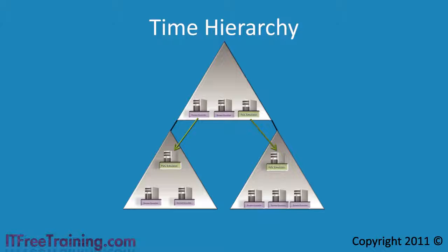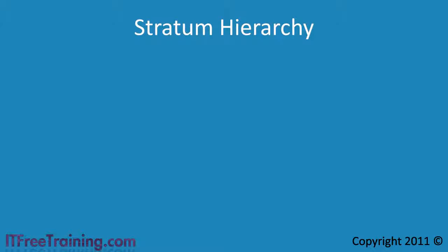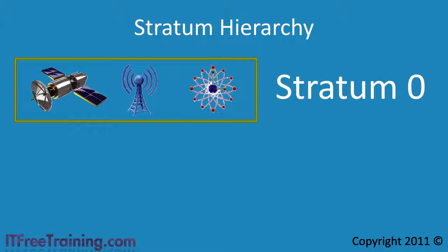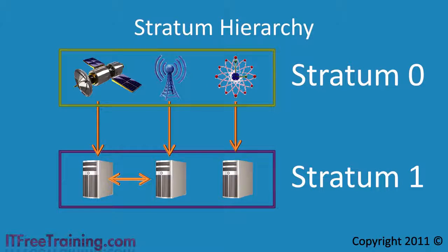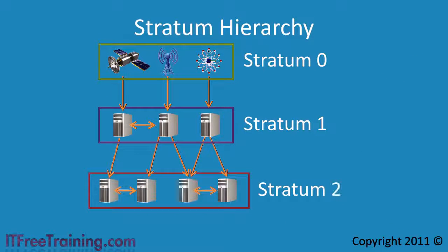If you decide to configure an external time source, you need to understand a little terminology on how external time sources work. External time sources use a hierarchy with each level called a stratum. At the top of the hierarchy, or stratum 0, are very reliable clocks — hardware atomic clocks, GPS clocks, and radio clocks. Stratum 0 clocks are connected directly to stratum 1. Stratum 1 computers generally act as time sources for the next level, stratum 2. In some cases stratum 1 and stratum 2 clocks will have restricted access while others are open to the public.